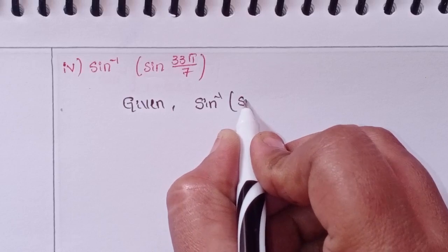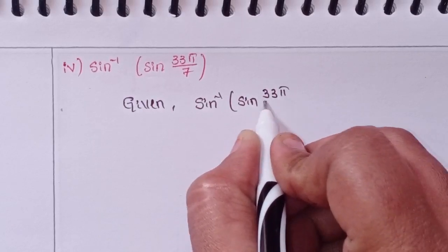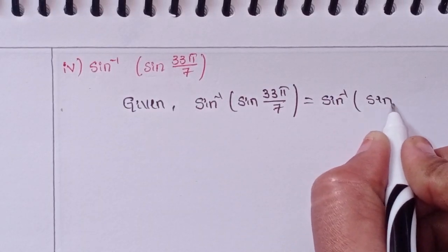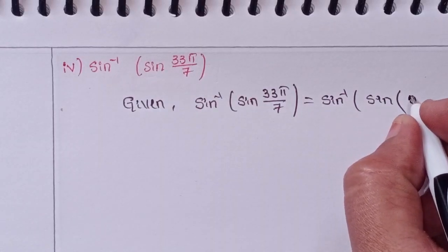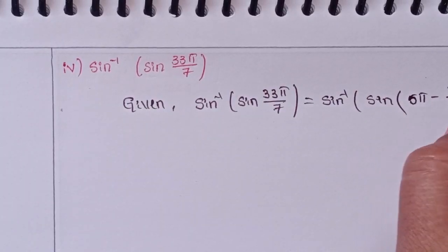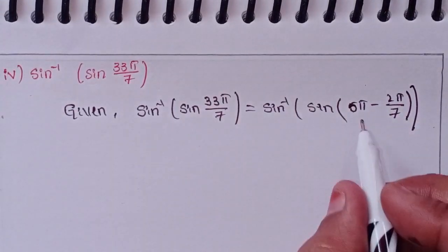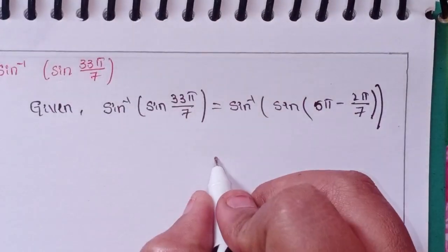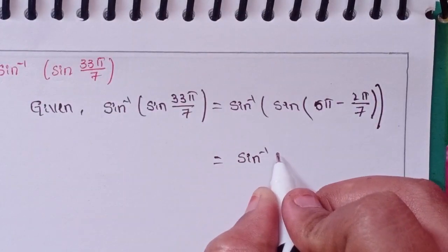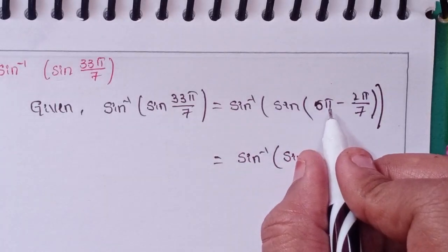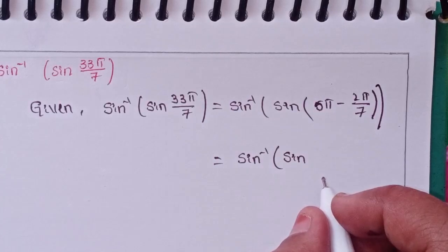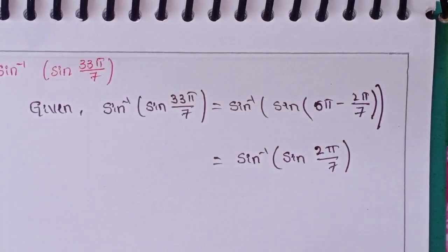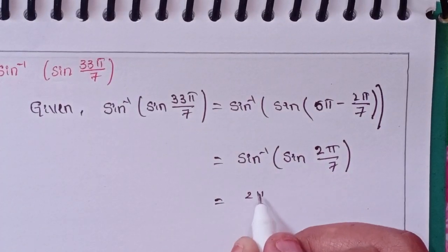Fourth problem: sin inverse of sin 33π by 7. We can write 33π by 7 as 5π minus 2π by 7, since 5 times 7 is 35 and 35 minus 2 is 33. So sin inverse of sin(5π minus 2π by 7) becomes sin inverse of sin(2π by 7). These two cancel, giving 2π by 7 as the solution.